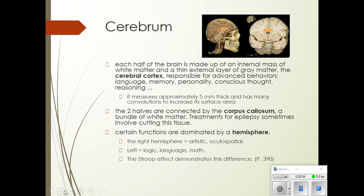The cerebral cortex is about five millimeters thick. It has convolutions — wrinkles — to increase its surface area. When there's more surface area, stuff works better. The wrinkliness of brains has often been investigated as an explanation for why some species seem smarter than others. Lots of surface area means we have lots of cerebral cortex and lots of connections for those advanced behaviors.